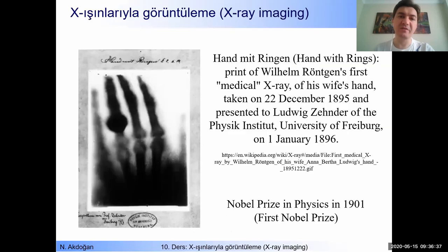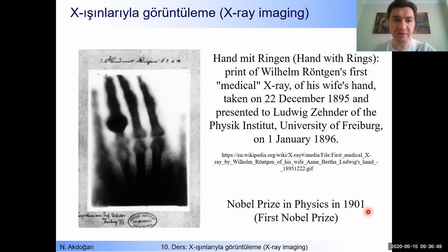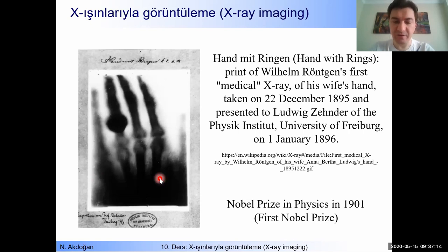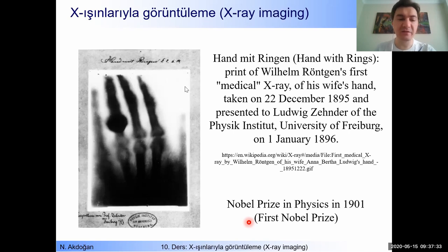Let me start with this picture. What do you see here? This is a hand, and you see a picture of the bones. There is a ring. This picture was taken by Wilhelm Röntgen — this is the first medical x-ray. This hand belongs to his wife, taken in 1895. Due to the discovery of x-rays, Röntgen was awarded the Nobel Prize in Physics in 1901, and this was the first Nobel Prize in the world.